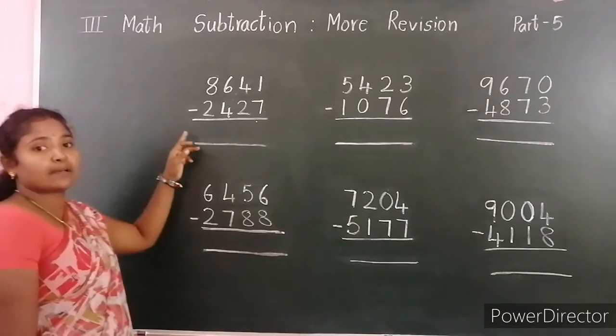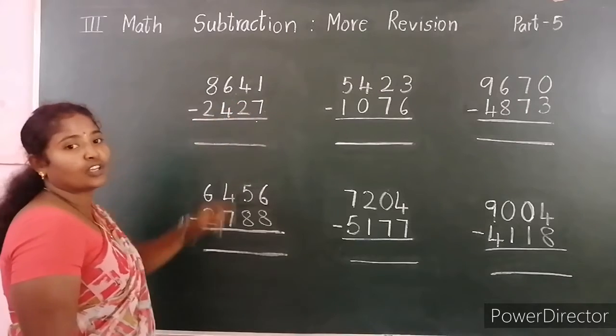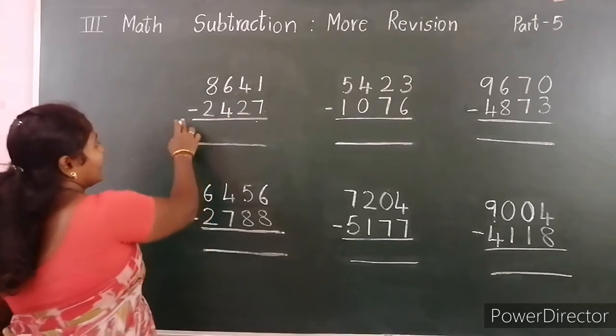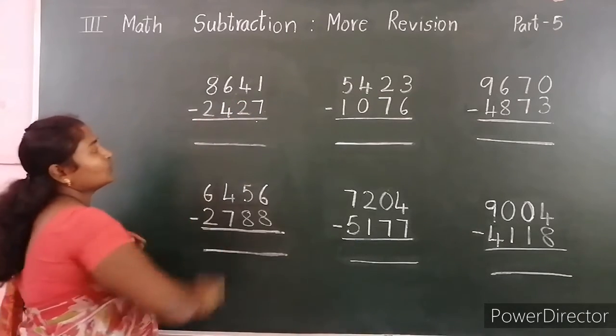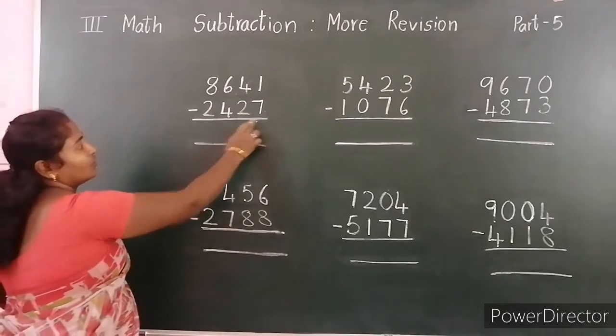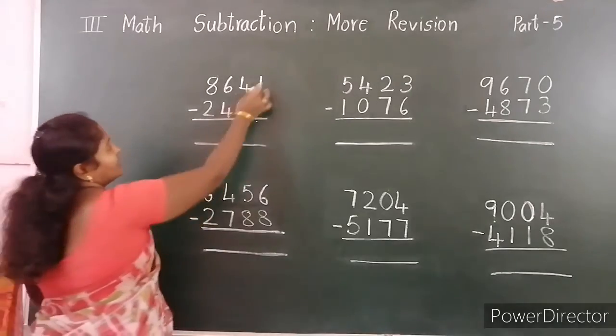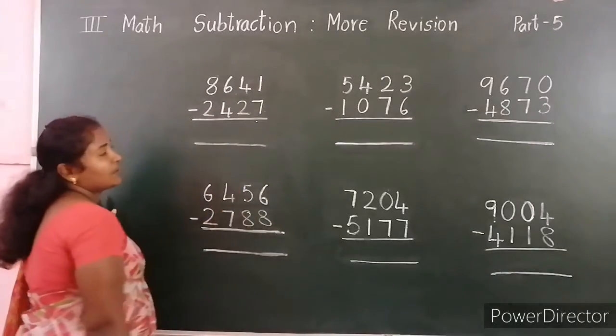First example: 8,641 minus 2,427. Start from the ones place.